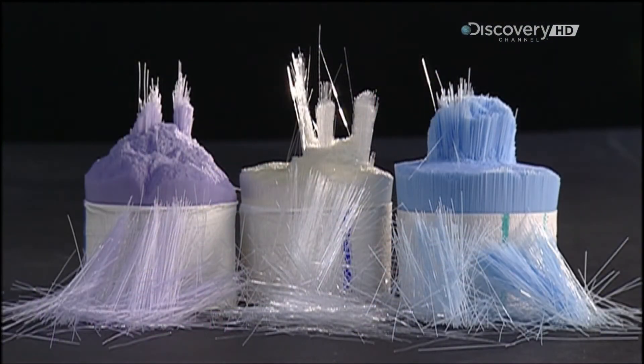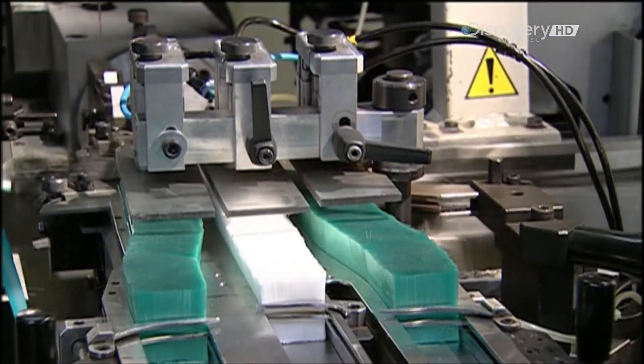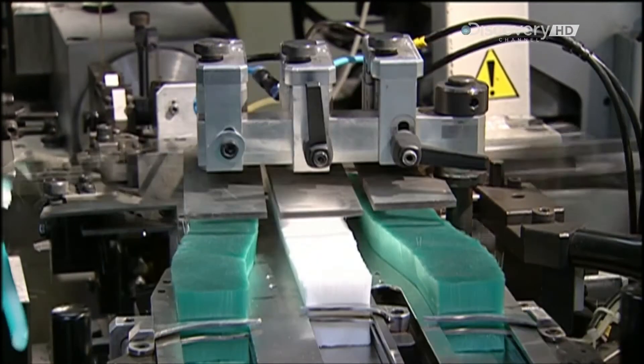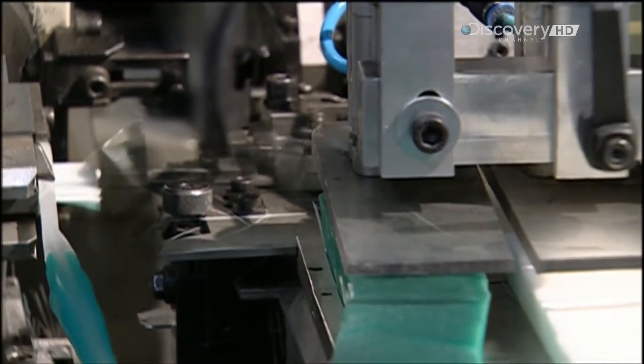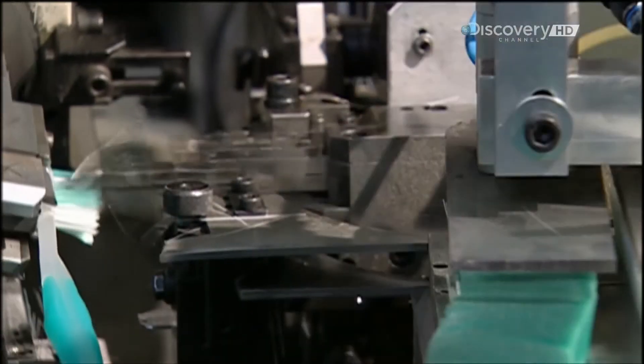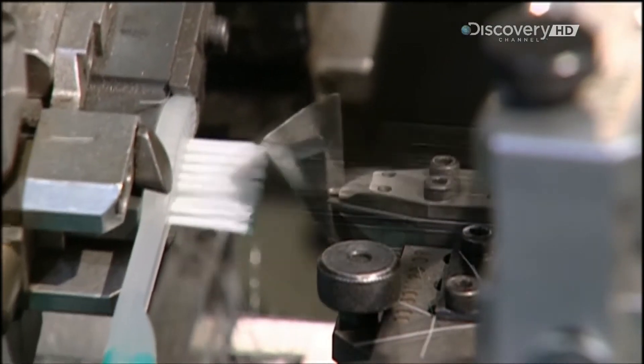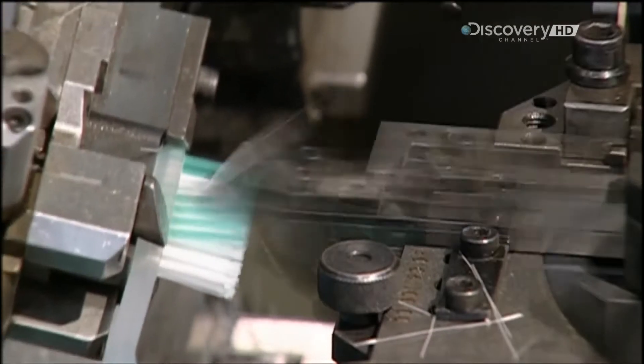These nylon fibers will form the bristles. A robotic arm pats them down so they sit evenly. Then, faster than you can blink an eye, the machine feeds the bristles into the holes in the head of the toothbrush handle.